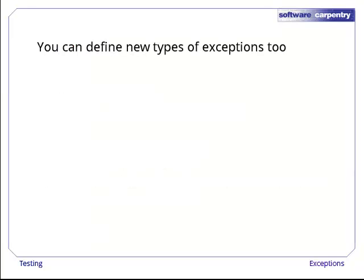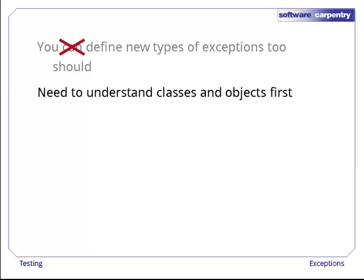You can define new types of exceptions if you want to, and in fact you should, so that errors in your code can be distinguished from errors in other people's code. However, this involves classes and objects, so we'll cover it in the lecture on object-oriented programming.